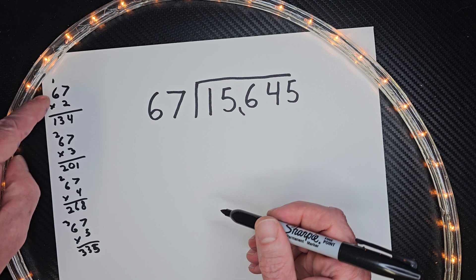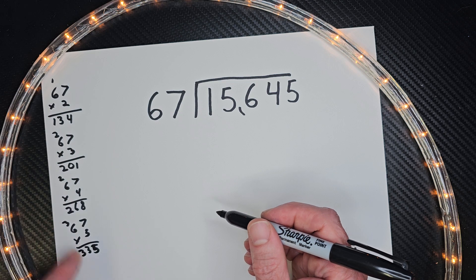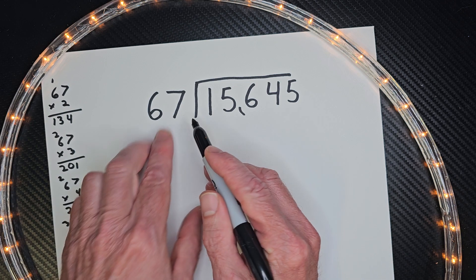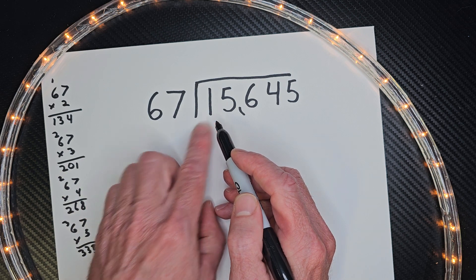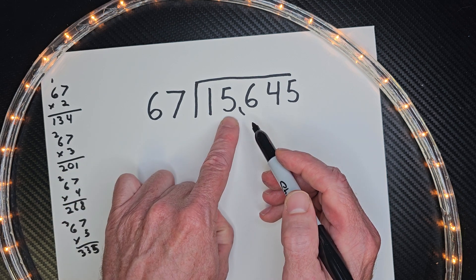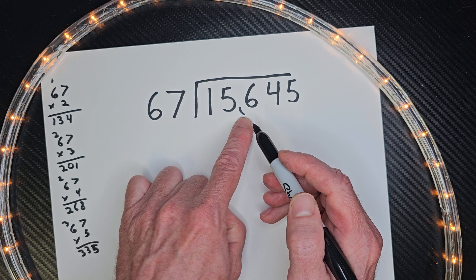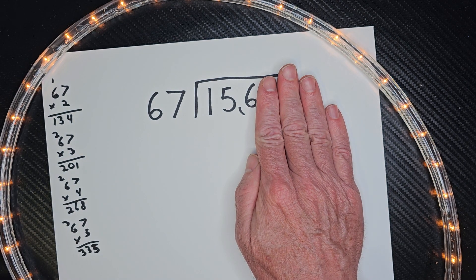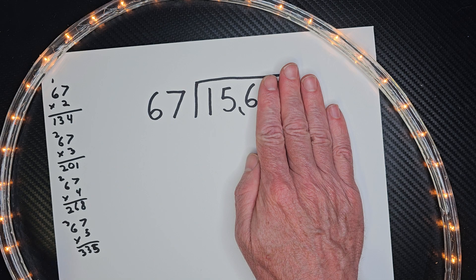So we have all of our hard work out. Now we just throw it in like a puzzle. So 67 cannot go into 1. 67 cannot go into 15. 67 can go into 156. Just cover these other numbers up if they get a little confusing for you. Don't even pay attention to them right now.